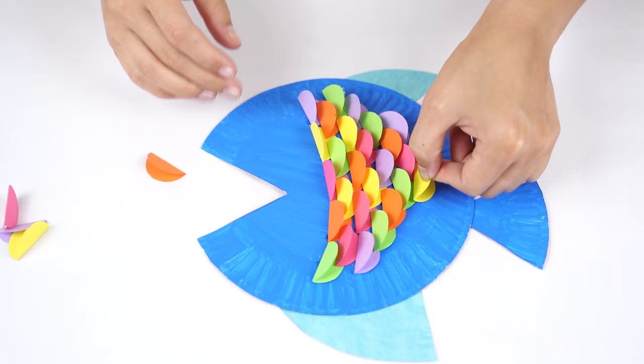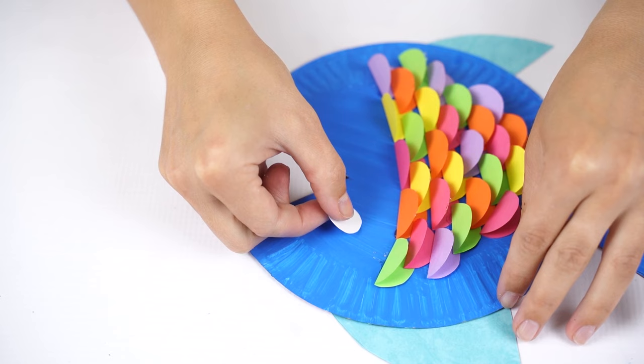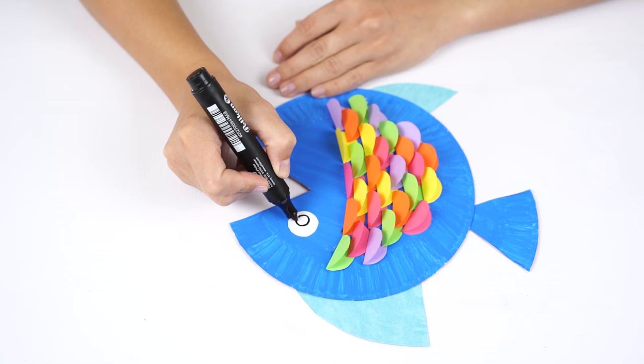Paste the white circle for the eye, and draw in a circular pupil with a black marker. Remember to leave some white space in the middle.